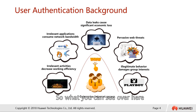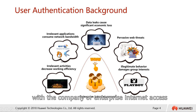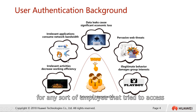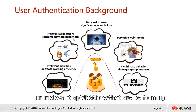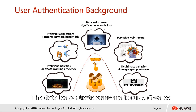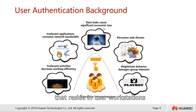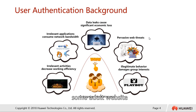Here is the user authentication background. All these related activities have to do with company or enterprise internet access — for example, any employee that tries to access a particular mentioned website, such as gaming websites or irrelevant applications performing downloads or uploads. There are also data leaks due to malicious software residing in user workstations, pervasive web threats like Trojans or malware, as well as illegitimate behavior that damages group interest, such as access to adult websites.